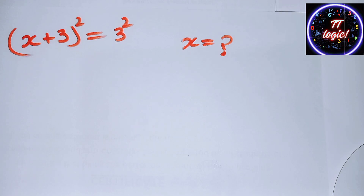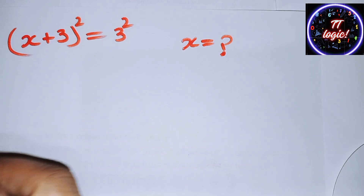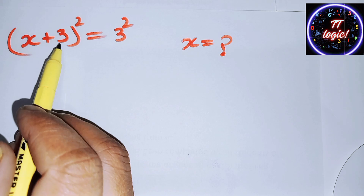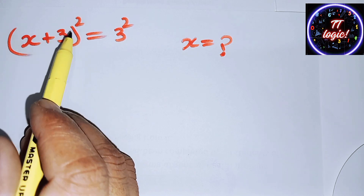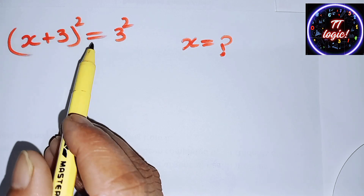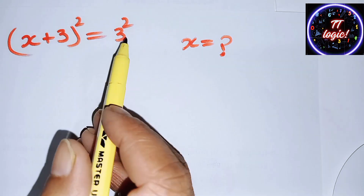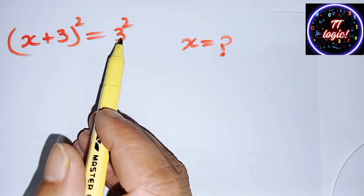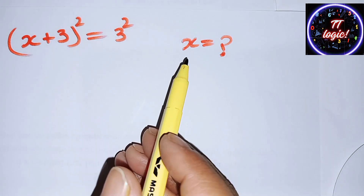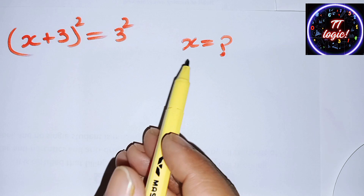Hello everyone, welcome. Today we solve a nice math Olympiad problem: (x + 3) squared is equal to 3 squared, and we need to find the value of x.